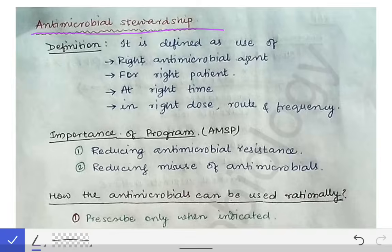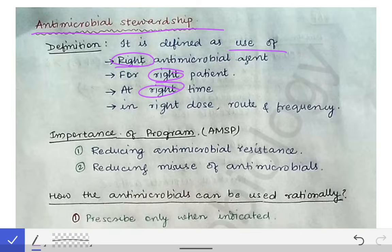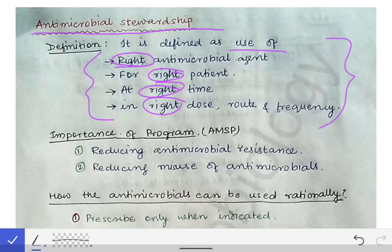Now we are going to talk about antimicrobial stewardship — sometimes examiners ask random questions to students and this is one such topic. Antimicrobial stewardship is defined as the use of the right antimicrobial agent for the right patient at the right time in the right dose, route, and frequency. So there are four 'rights' in the definition — please remember this definition.